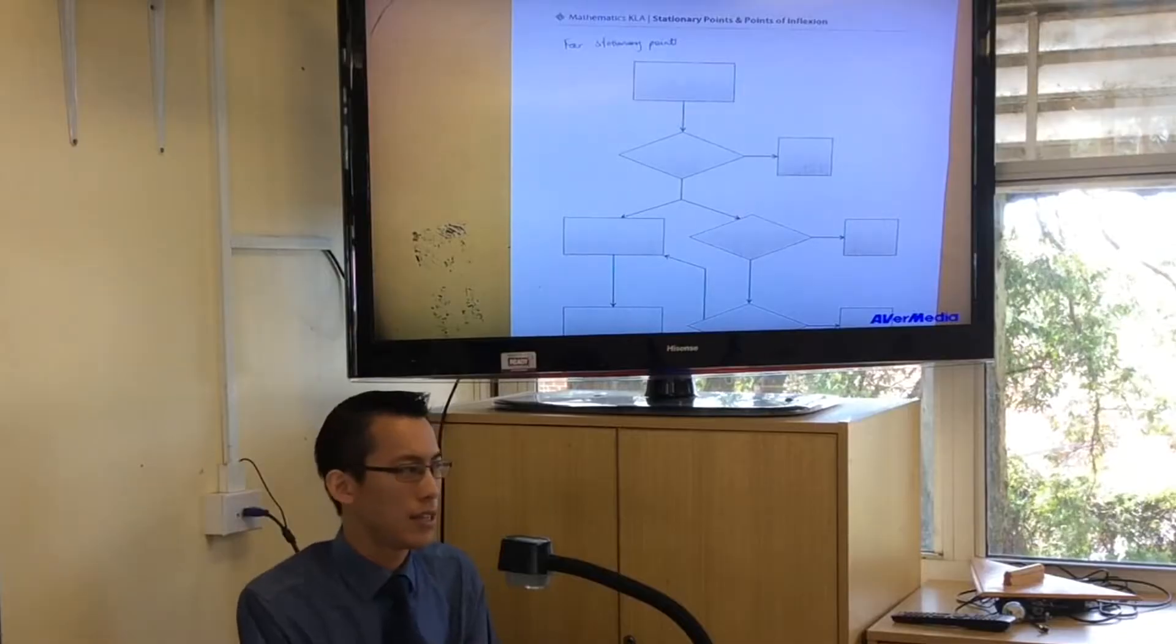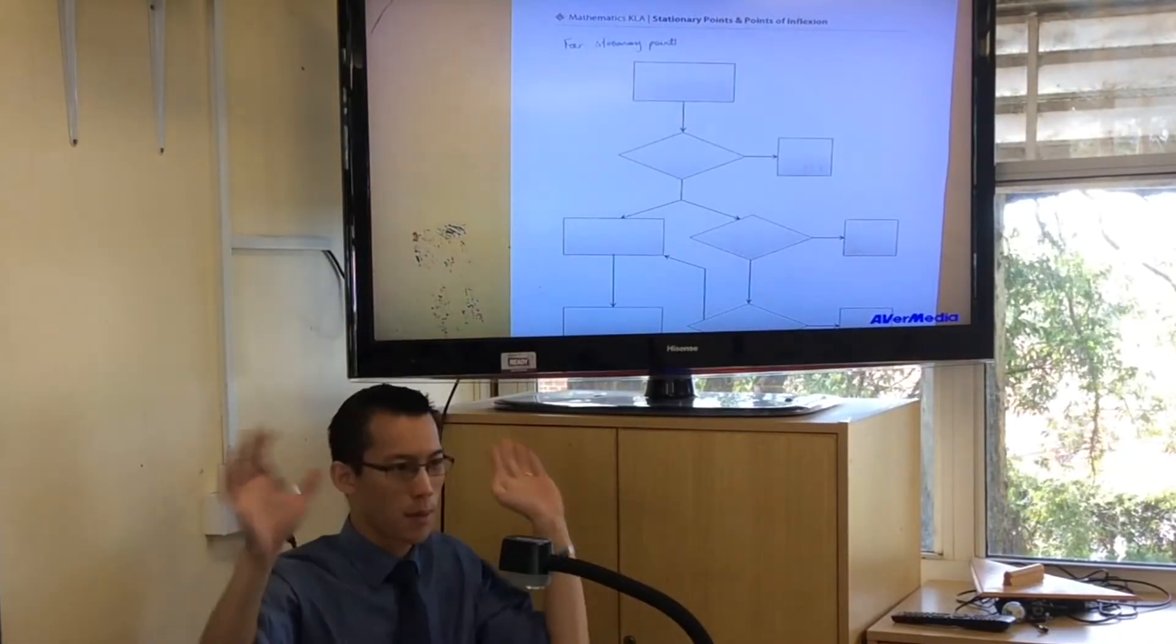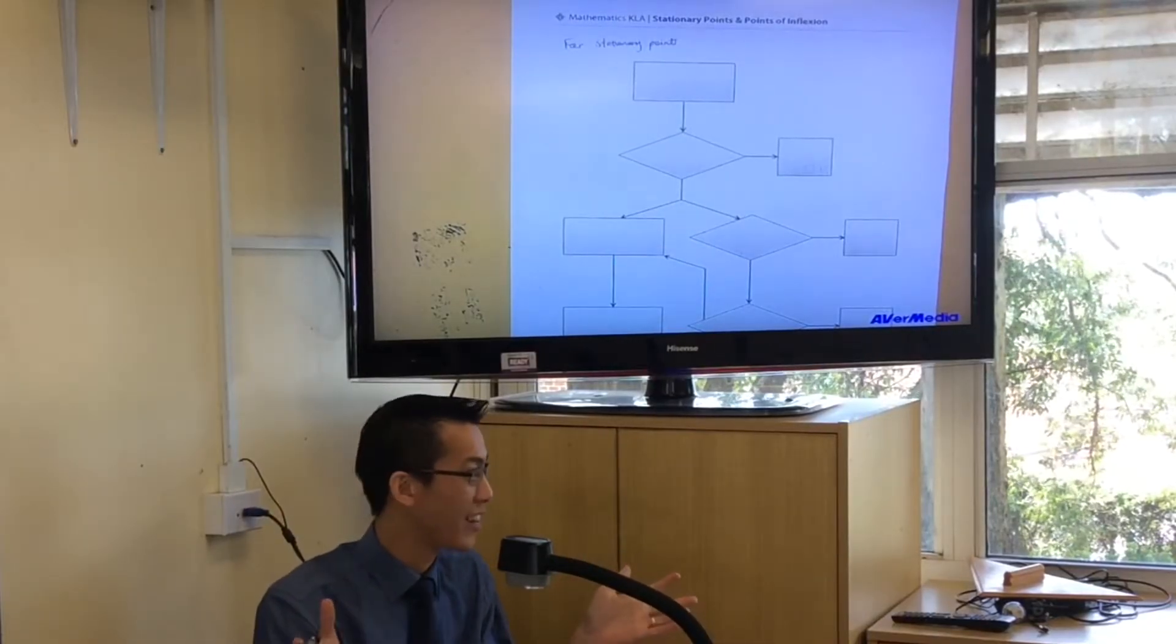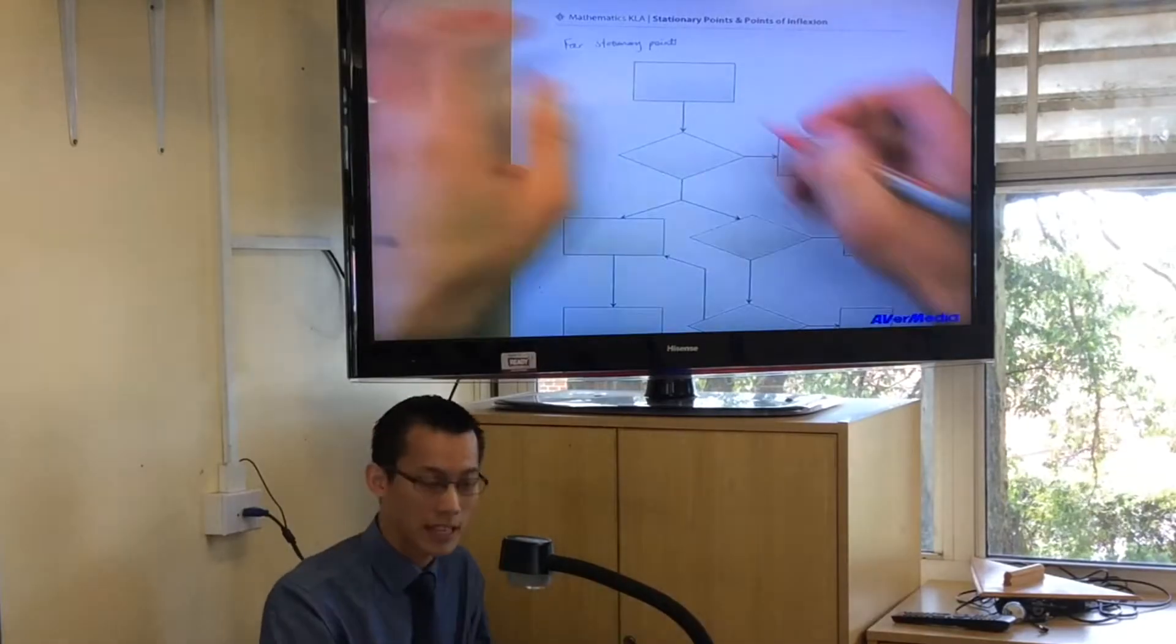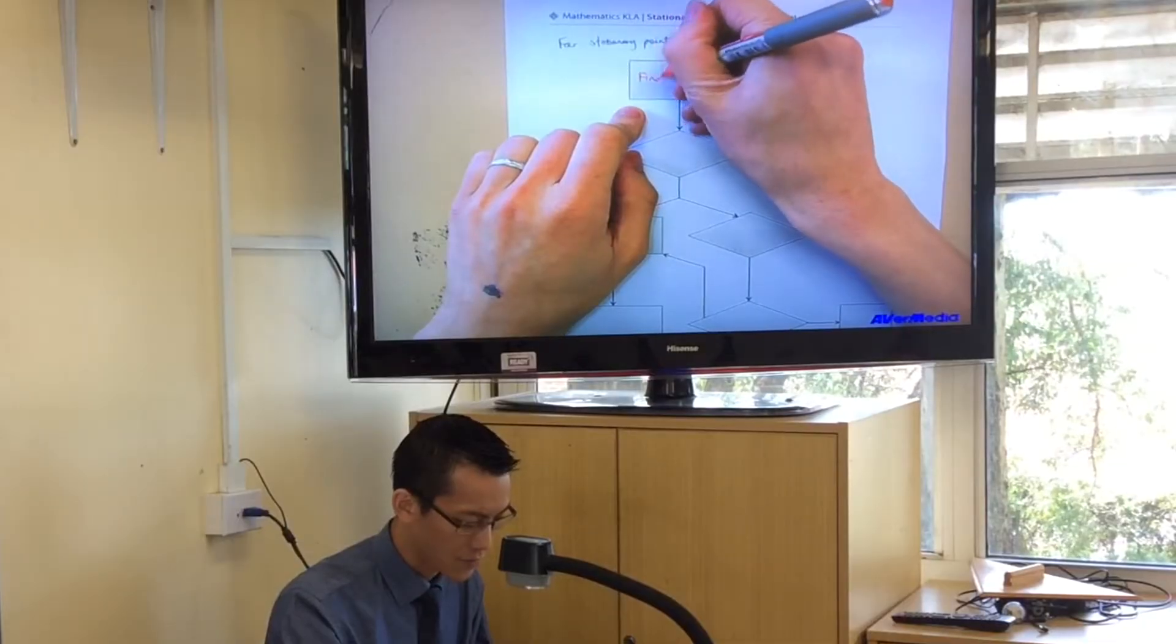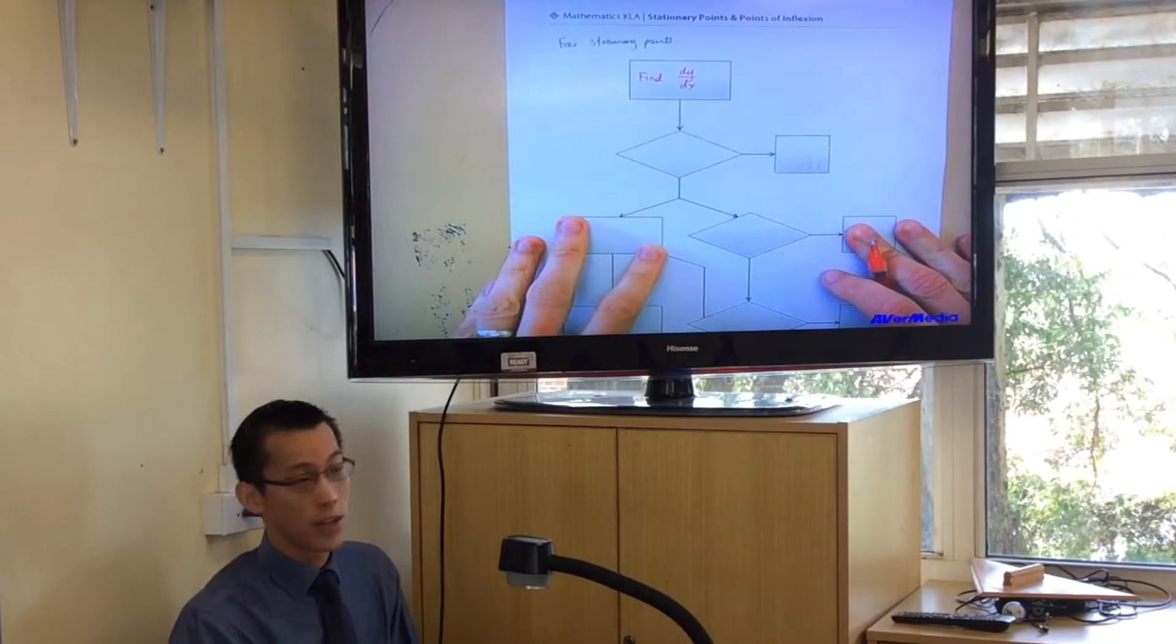What's the very first thing you need to do if you get given a function, y equals, you know, x cubed, blah blah blah? You want to find stationary points. There's a first step you have to do before anything can happen. What is it? Differentiate. Yeah, you should differentiate, find the first derivative. So let's write that down. That is the first step right here: Find dy/dx. You can't do anything until you have the first derivative.